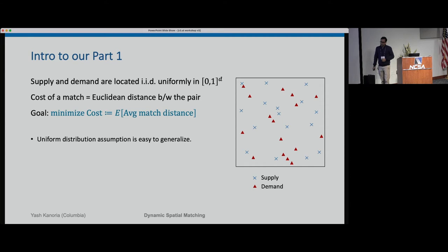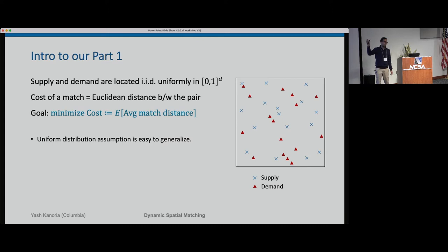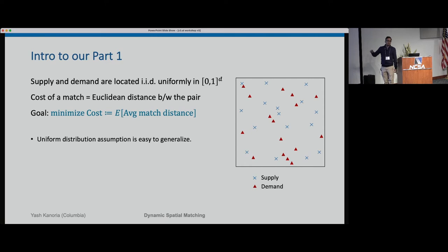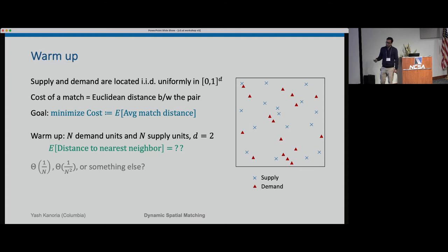Here's an introduction to the setting. We have a d-dimensional unit hypercube where supply and demand are located — this is a 2D version, with supplies as crosses and demands as triangles. Demand comes online, and later even supply will come online. For now, let's think of a static setting to build intuition. We minimize the expected average matching distance, using a uniform distribution that is easy to generalize.